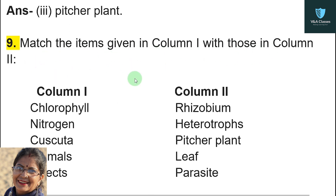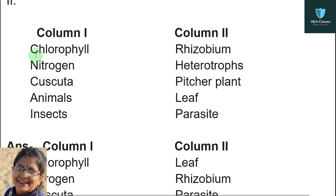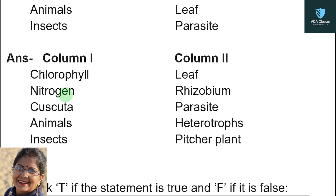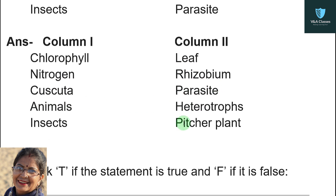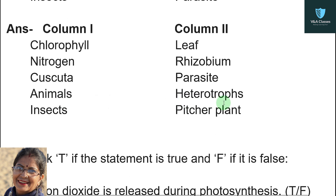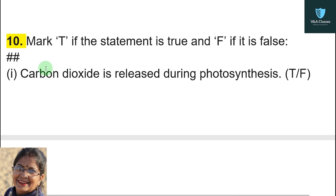Question number nine — match the items in column one with those in column two. Column one: chlorophyll, nitrogen, Cuscuta, animals, insects. Column two options: rhizobium, heterotrophs, pitcher plant, leaf, parasite. Answers: chlorophyll → leaf; nitrogen → rhizobium; Cuscuta → parasite; animals → heterotrophs; insects → pitcher plant.